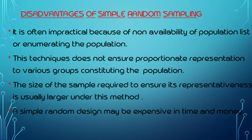This technique does not ensure proportionate representation to various groups constituting the population. The population may be divided into different groups such as educated neighborhood, interests, body level, occupation, etc., and simple random sampling may not represent all of them proportionately.